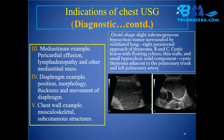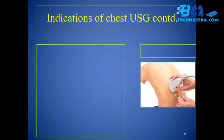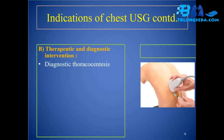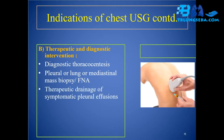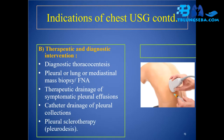Indications of chest USG — therapeutic and diagnostic interventions: diagnostic thoracocentesis, pleural or lung or mediastinal mass biopsy or FNA, therapeutic drainage of symptomatic pleural effusions, catheter drainage of pleural collections, pleural sclerotherapy and pleurodesis, and USG-guided thoracocentesis.